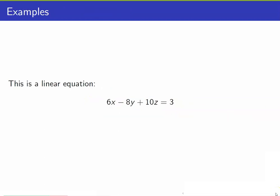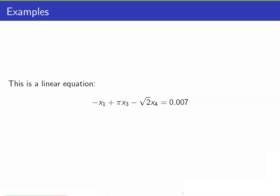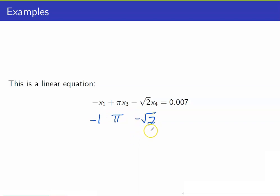This is an example of a linear equation. Our coefficients are 6, negative 8, and 10. And our variables are x, y, and z. Here is another example of a linear equation. Our coefficients here would be negative 1, pi, and negative square root of 2. Take note that the coefficients need not be integers.